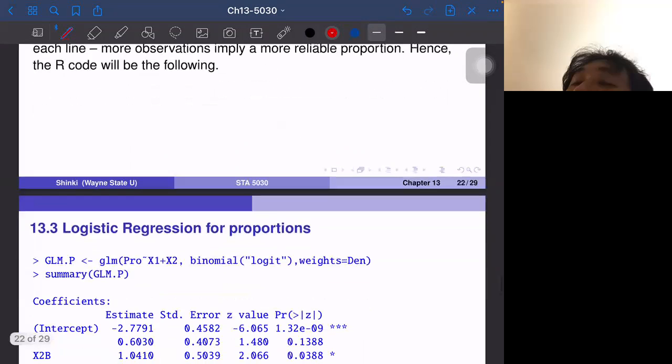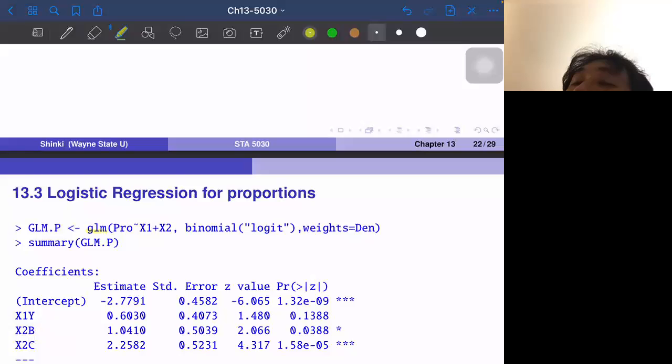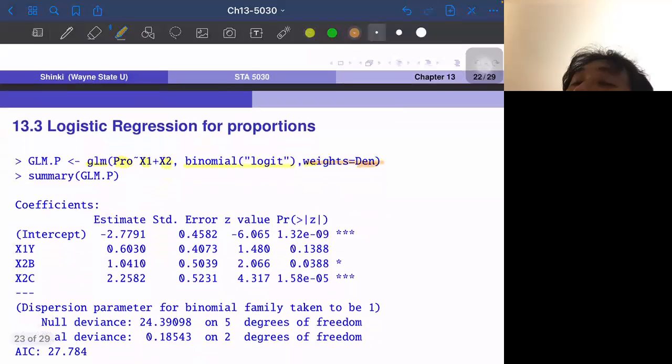So in this case we can still use the GLM function, and the proportion is the response variable and X1 and X2 as the predictors, then still we can use the binomial logit function. Then we specify weight. So the denominator is basically the number of observations. So the higher number of observations, then we put the higher weight on that row. Then here's the result.